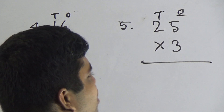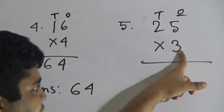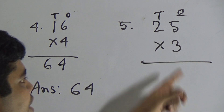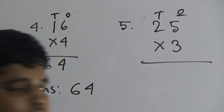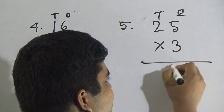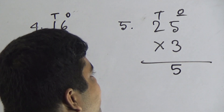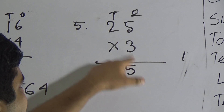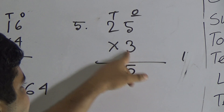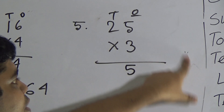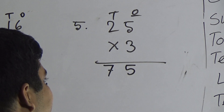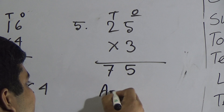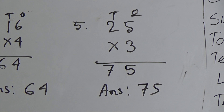We need to know times table 3 for 5: 3 fives are 15. From 15, I write 5 here and carry the 1. That 1 is added with the multiplication of the tens digit: 3 twos are 6, and 6 plus carrying 1 equals 7. So 7 is written here. When we multiply 25 by 3 we get 75, and that is the answer.